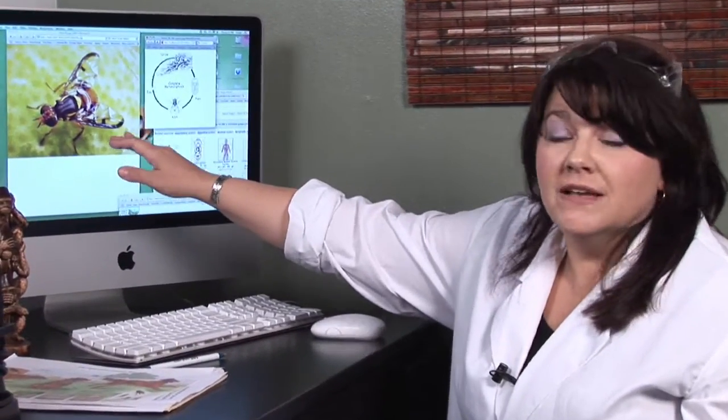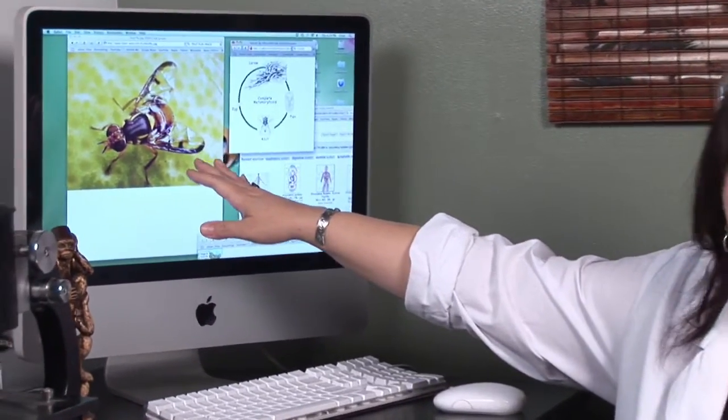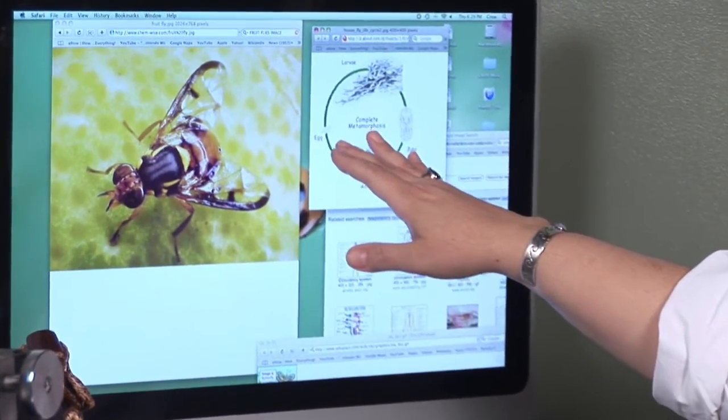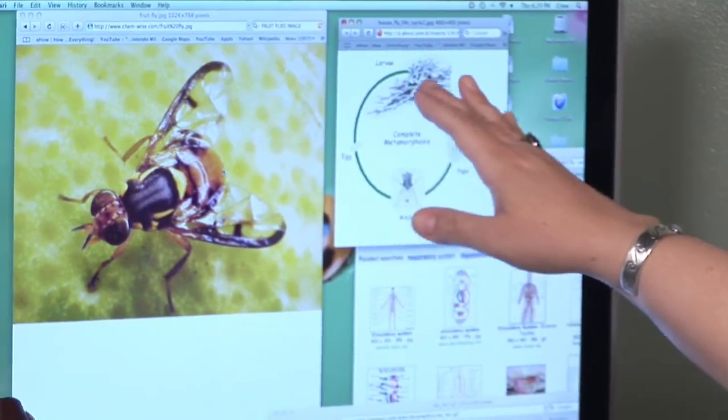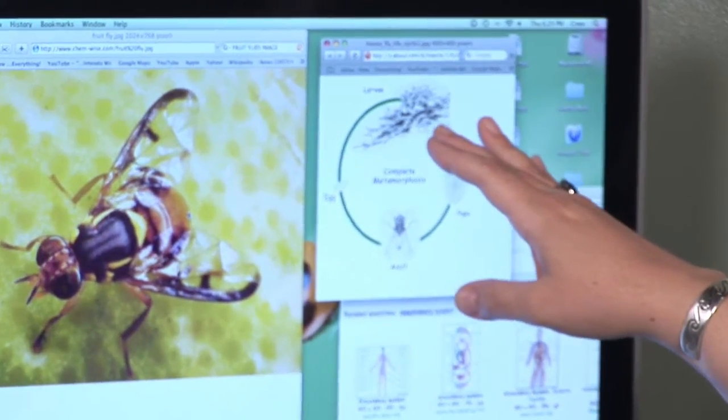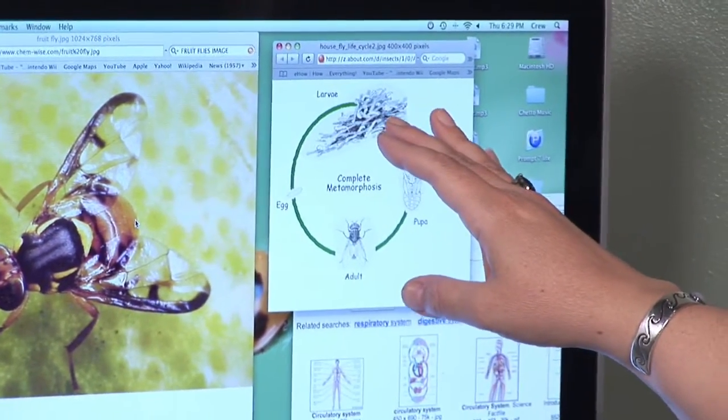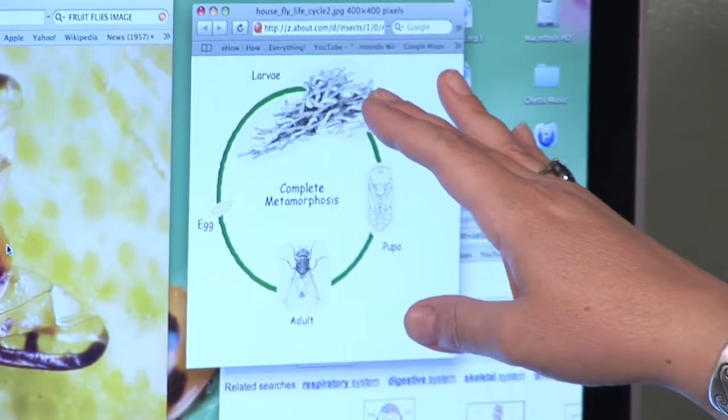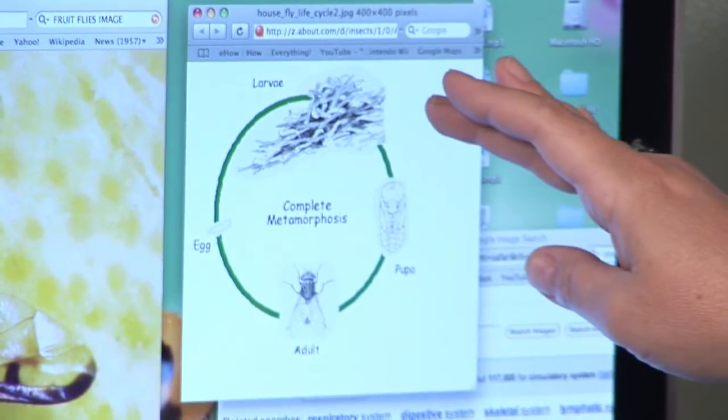Fruit flies are called fruit flies because they're attracted to fruit. And in addition to eating the fruit, they'll actually lay their eggs on the fruit. Once the egg hatches, it becomes a larva or what sometimes you might think of as being a caterpillar if we're talking about a butterfly metamorphosis. That larva will continue to feed on the fruit.